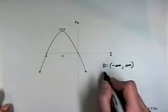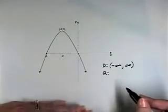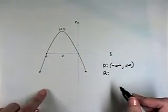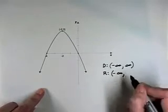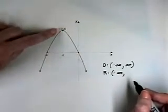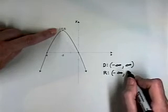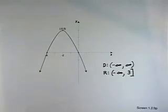The range is going to be given as all the y values. Notice that my y values run from the bottom of the screen to the top. The graph continues down infinitely. So we start at negative infinity and then continues upward until we get to this highest point on the graph. Notice the y value of this point is 3. Because that point is a part of the graph, we want to enclose it in a set of brackets.